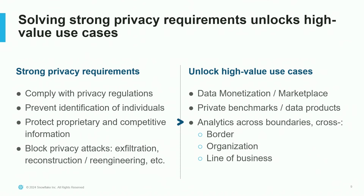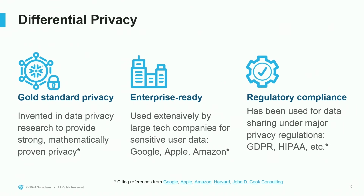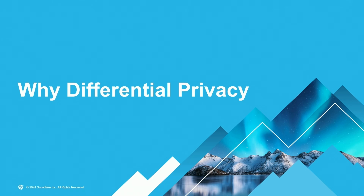These use cases can't fully be solved without a solution for strong privacy. The technology that solves these high-value, high-privacy use cases is differential privacy. Differential privacy was innovated from data privacy research to meet stringent requirements for analytics and reporting on sensitive data. Outside of the research space, it's used extensively by large tech companies — Google, Apple, Amazon — as well as by organizations to share data under privacy regulations like GDPR and HIPAA. Let's first understand why we need a specific technology to solve these high-privacy use cases.